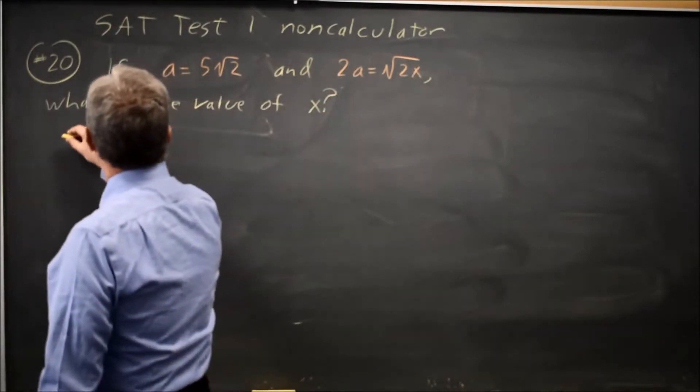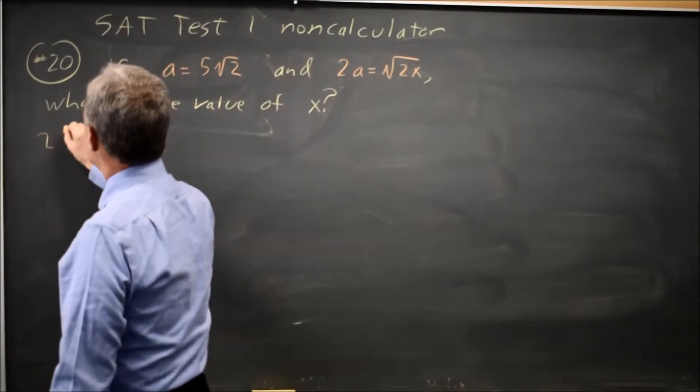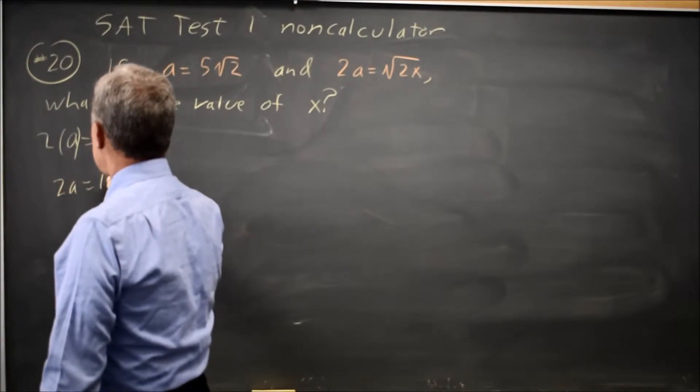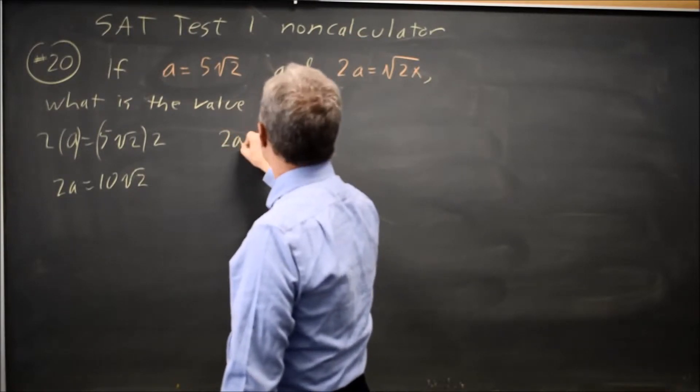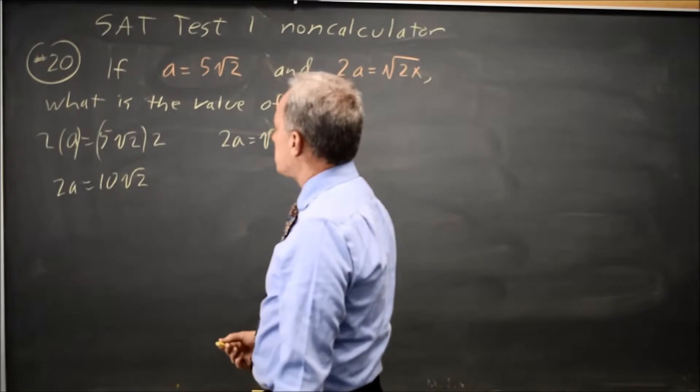I'm going to take A equals 5 root 2 and multiply both sides by 2 to get 2A equals 10 root 2. That wasn't necessary, but it is easier to think about with 2A equals root 2X, the equation that includes X.